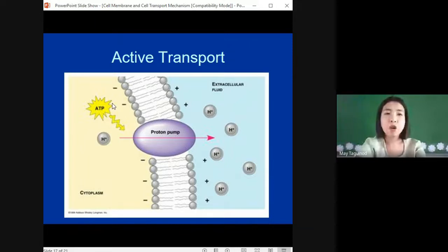We have two types of active transport: molecular transport with protein pumps and bulk transport, which includes endocytosis and exocytosis.